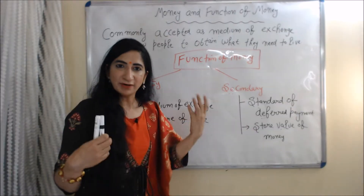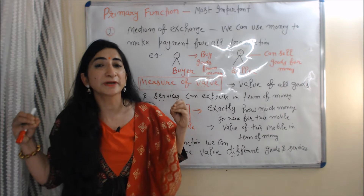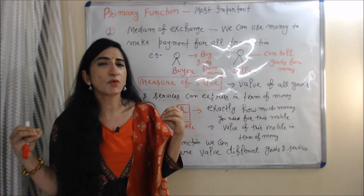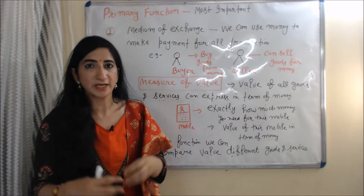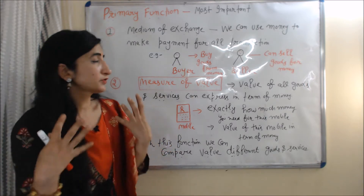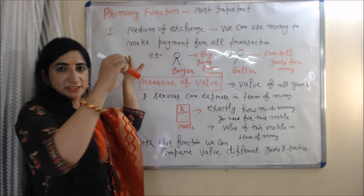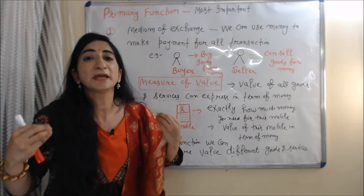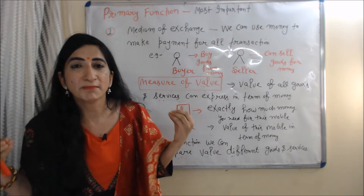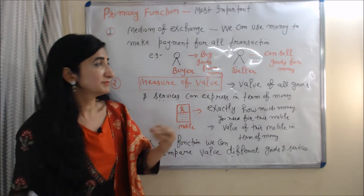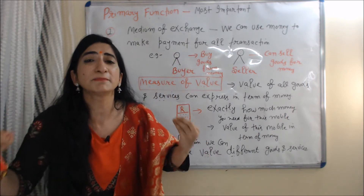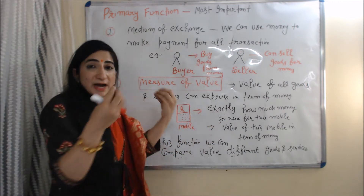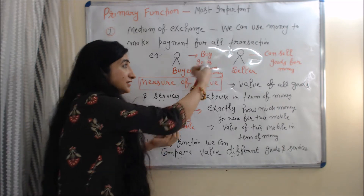Firstly, we talk about the primary function of money. The primary function of money is the most important function of money. The first primary function is medium of exchange, which means we can use money to make payment for all transactions. For example, a buyer can buy goods with money, and on the other hand, a seller can sell goods for money.